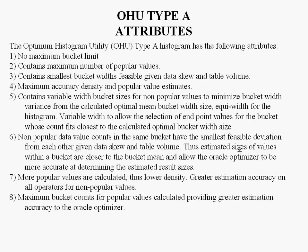OSU Type A attributes: there is no maximum bucket limit — no such limit as 254, which currently exists in Oracle. It contains the maximum number of popular values possible to be calculated, and the smallest bucket widths feasible given data skew and table volume. This provides maximum accuracy, density, and popular value estimates. More popular values are calculated, resulting in lower density and greater estimation accuracy on all operators for non-popular values, with maximum bucket counts for popular values providing greater estimation accuracy to the Oracle Optimizer.